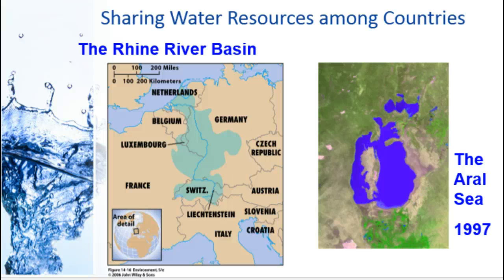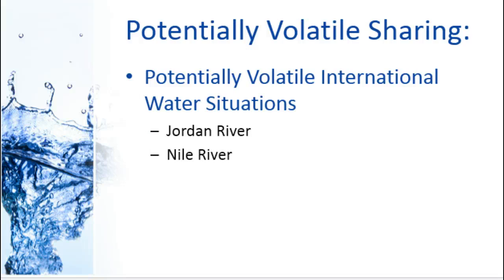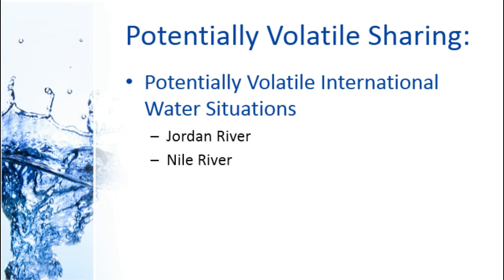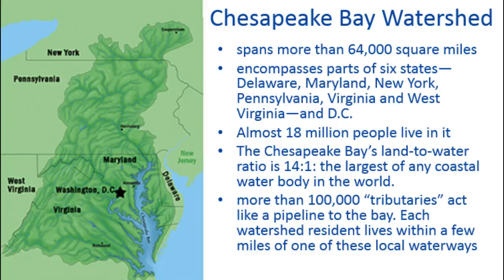In many places you don't have a particular water resource devoted to one particular country. If you have a mountain range that runs through many countries, those mountains probably drain into all of the different countries and they're sharing that water source. So if it's an area where there's some instability, it can become a very volatile situation — for example, the Jordan River and the Nile River, both in the Middle Eastern area where there's already a lot of conflict.